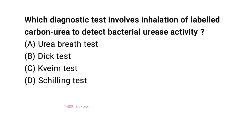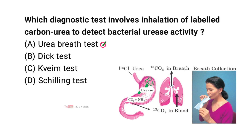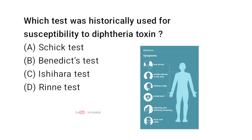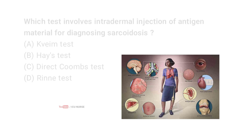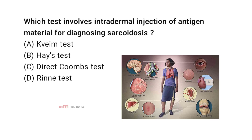Which diagnostic test involves inhalation of labeled carbon urea to detect bacterial urease activity? Correct answer A: Urea breath test. Which test was historically used for susceptibility to diphtheria toxin? Correct answer A: Schick test. Which test involves intradermal injection of antigen material for diagnosing sarcoidosis? Correct answer A: Kveim test.